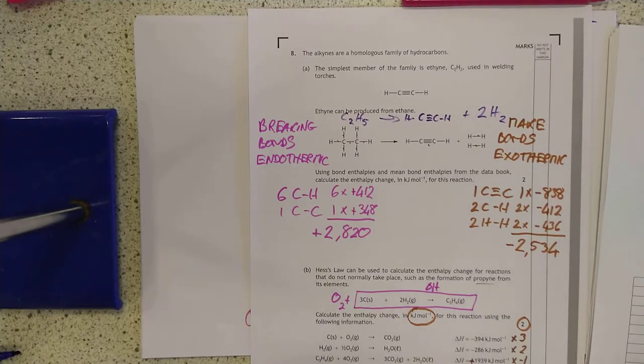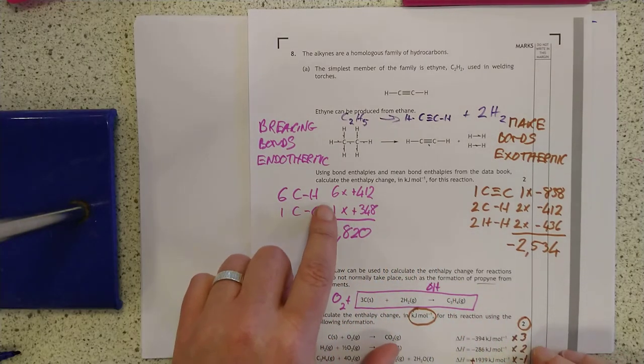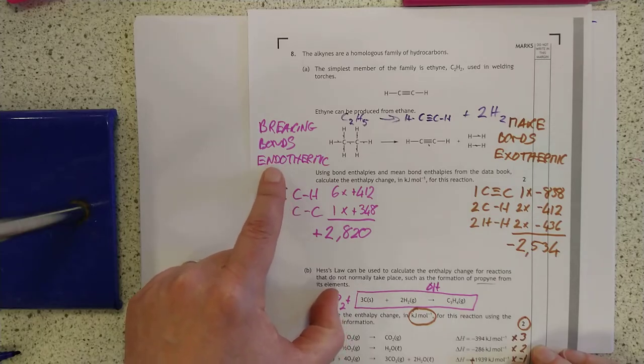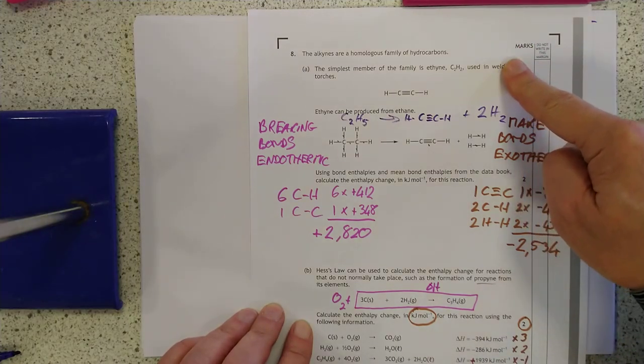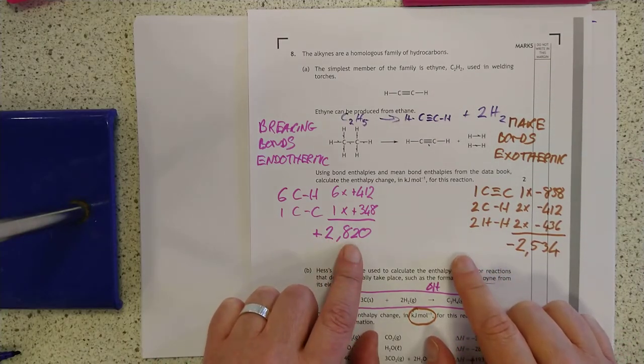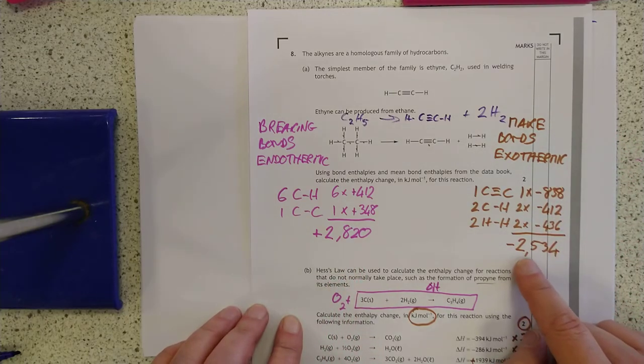As if by magic, the numbers have all appeared. Six CH bonds, six lots of 412. Add up this, it comes to positive. Remember, breaking bonds is endothermic, and endothermic is positive. If you can't remember delta Hs, I'll try and put a link somewhere up here to my video on delta H from a long time ago. So that's positive 2820. And making is exothermic, so these are all negative. So that's negative 2534.